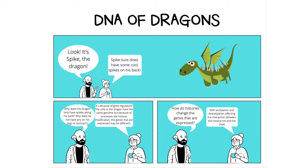In this example, one individual is questioning why the dragon he spotted only has spikes on his back and not on other areas of his body. The second individual responds by stating that the expression of the spikes is possible in every cell due to every cell in the dragon's body having the same genome. However, the reason that every cell does not express the spikes is because of a regulatory process such as histone modification.